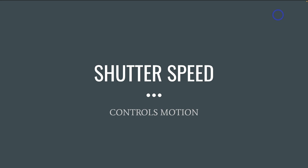Today we're going to take a look at one of the three aspects of the exposure triangle, and that aspect is what we call shutter speed. Shutter speed in the camera controls motion. Why is it important that we learn how to use the aspects of the exposure triangle, and in this case shutter speed, when we could simply just turn on automatic on the camera?